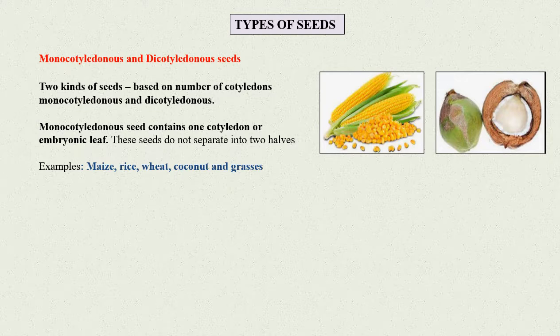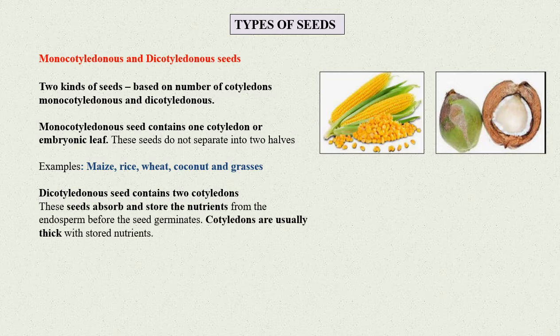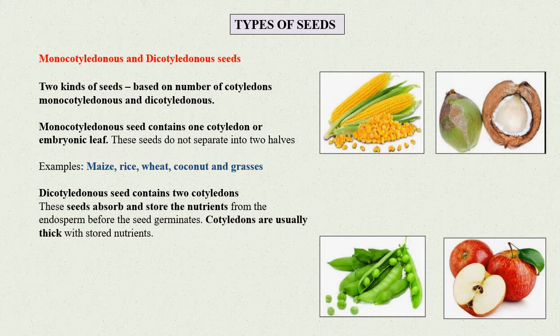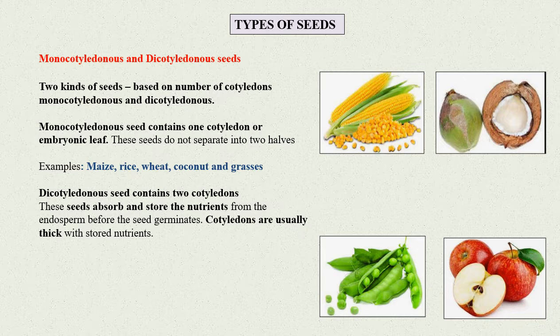Dicotyledonous seed contains two cotyledons. These seeds absorb and store the nutrients from the endosperm before the seed germinates. The cotyledons are usually thick with stored nutrients.